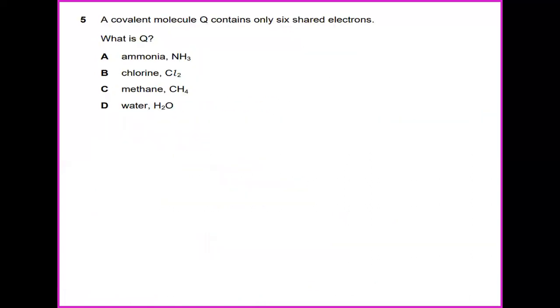Number 5: A covalent molecule Q contains only 6 shared electrons. What is Q? From this diagram we know that this is NH3. So the answer will be A, ammonia.